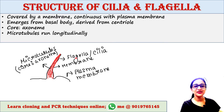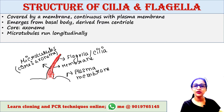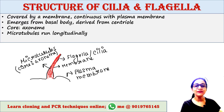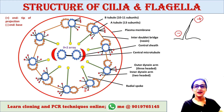The core of the cilia or flagella is called the axoneme. The axoneme contains a series of microtubules — shown here as red-colored strands — that run longitudinally through the entire organelle.